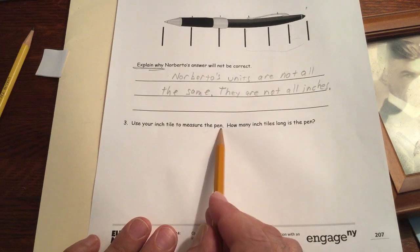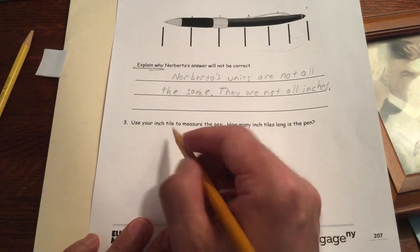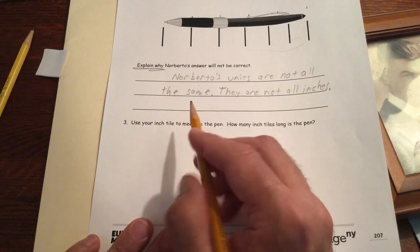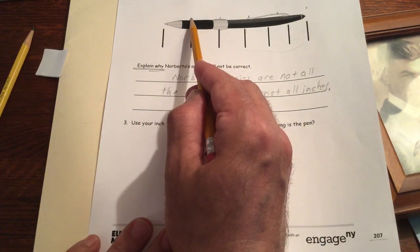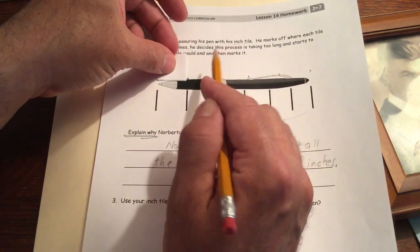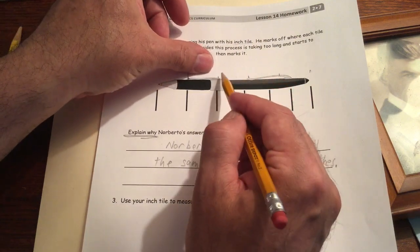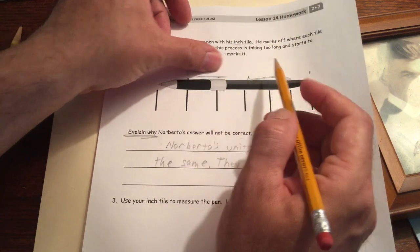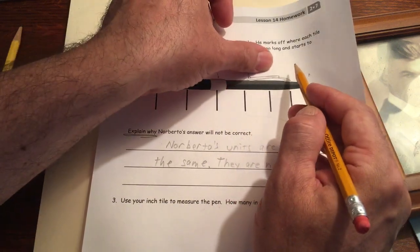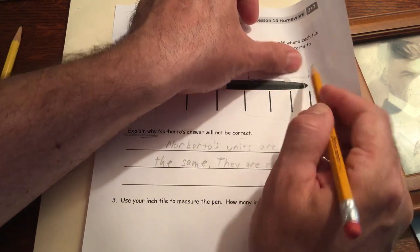Now it says use your inch tile to measure the pen. I just showed how to do that. How many inch tiles long is the pen? And now this is a word question. This question is asked in words, so we have to answer it in words. And we showed the marks here. That shows right here. So we want to show our work for that. We want to show our marks. There's one, and if you have to use a ruler for this, you just make a mark every inch. At every inch, you make a mark. So it's right on.